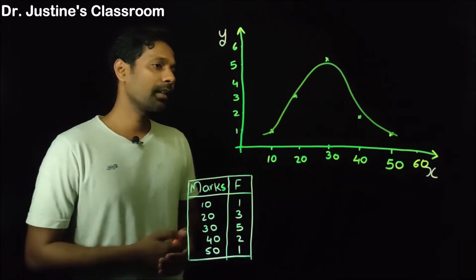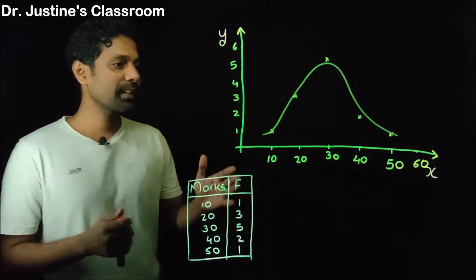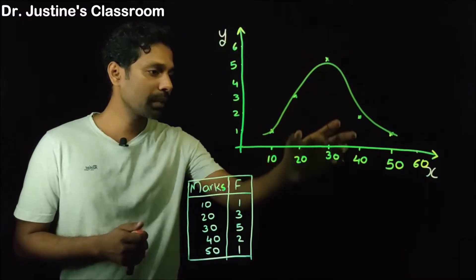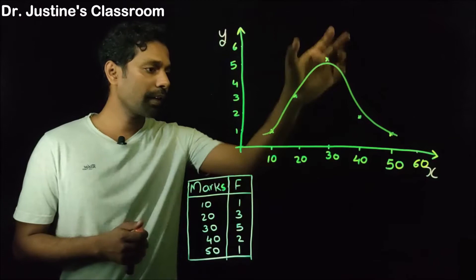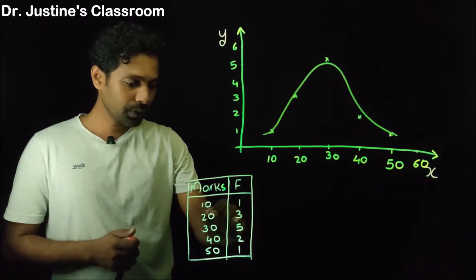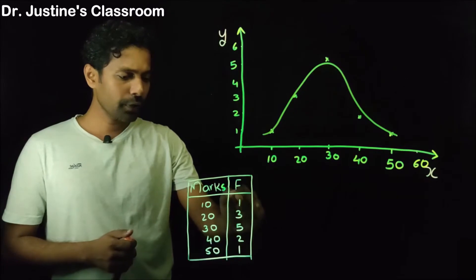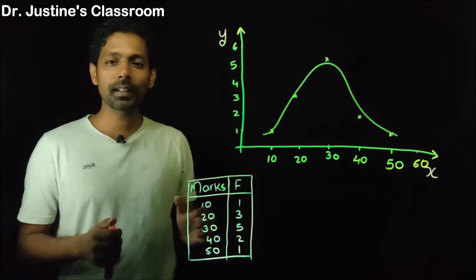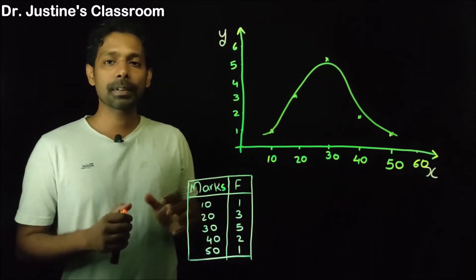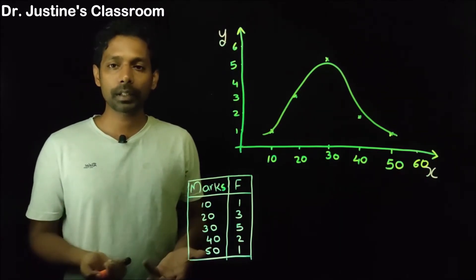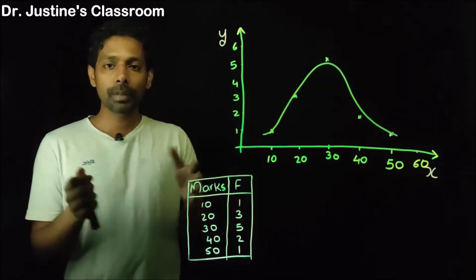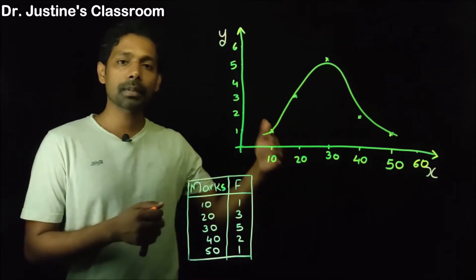Let us look at this curve. It looks like a perfect curve. The major reason is that this curve shows a pattern where majority of the samples fall in the average range. If you look at this data, majority of them are between 20 and 40 — that's 3, 5, 2 — and very few people at the extreme levels. This is a normal curve. Why is it a normal curve? Because it represents the usual data: majority in the center and some people at the extreme levels.